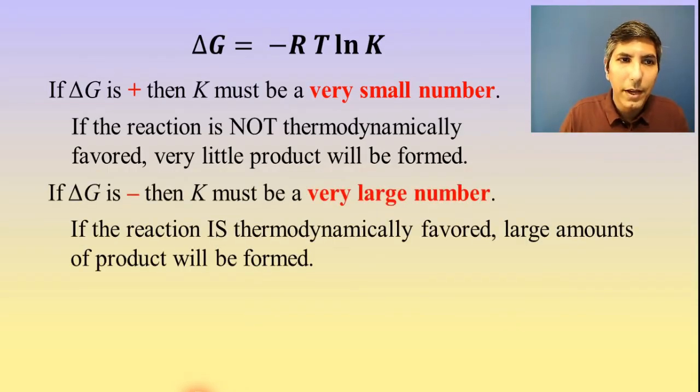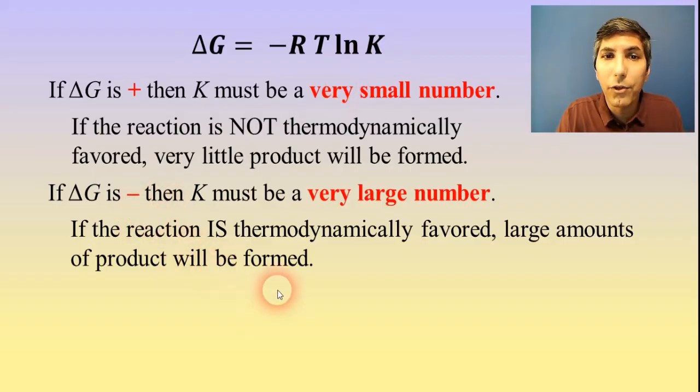Now, the opposite would also have to be true. If delta G is a negative number, whenever you do the calculation, that means that K must be a very large number. And that's just a numerical expression, a numerical way of talking about this. What that means for our chemistry here is that if delta G is negative, then we're talking about a thermodynamically favored process, aren't we? So when a process is thermodynamically favored, we're going to have large amounts of product, large value for K. That's what that means. A lot of product is formed. And that makes sense. Because if a reaction is thermodynamically favored, you would expect that reaction to be quite successful. You'd have a lot of product.